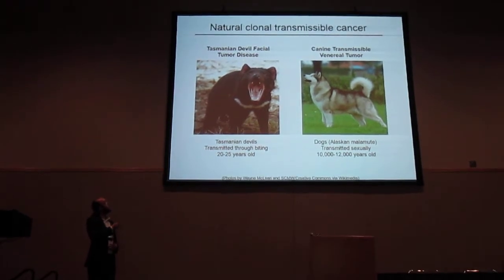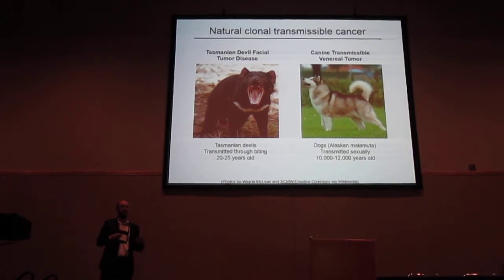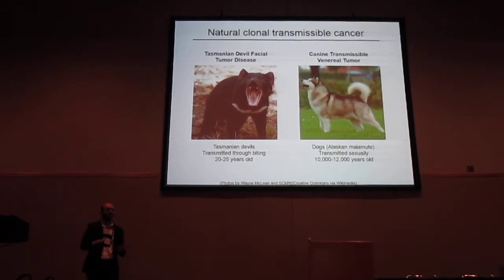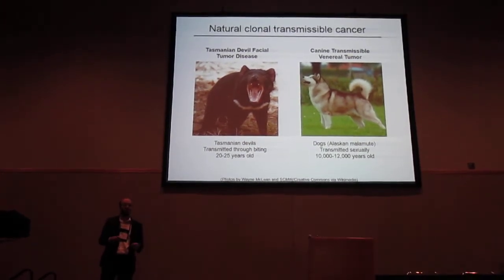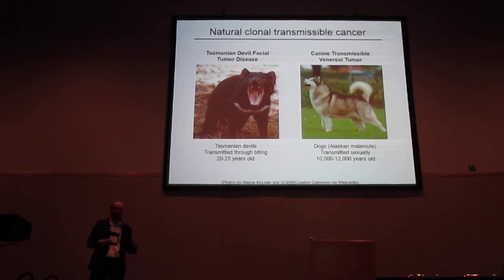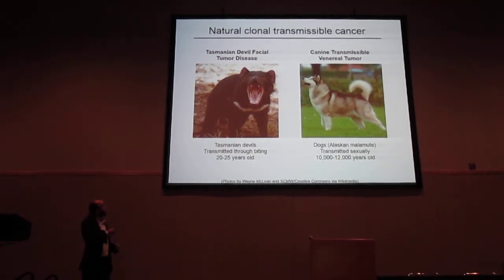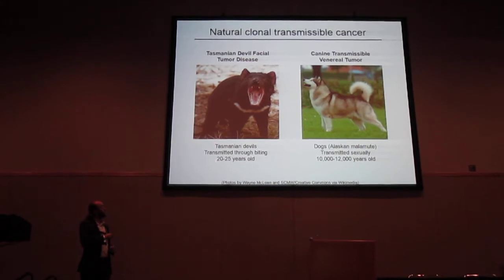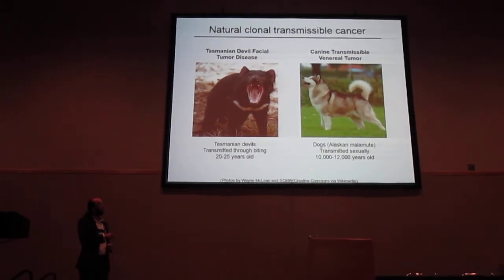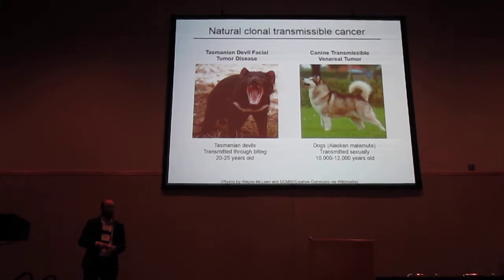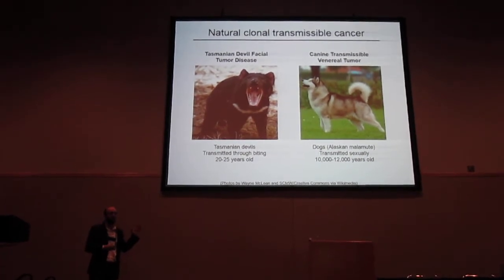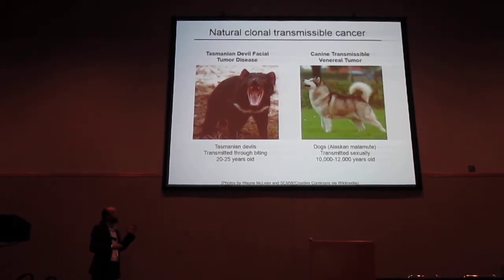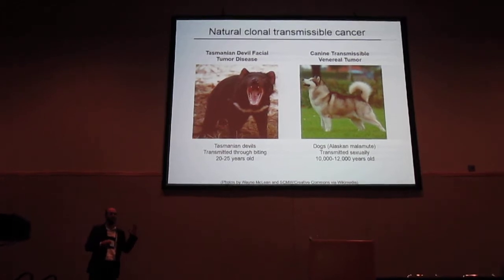The other previously known case is the canine transmissible venereal tumor — also a solid tumor that spreads through sexual contact in dog populations, primarily in feral populations. These two are drastically different in age: one is about 20 to 25 years old, and the other is estimated to be 10,000 years old or older. So we wanted to know if this sort of transmissible cancer phenomenon was what we were seeing in the clams.